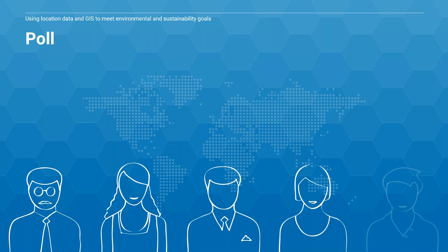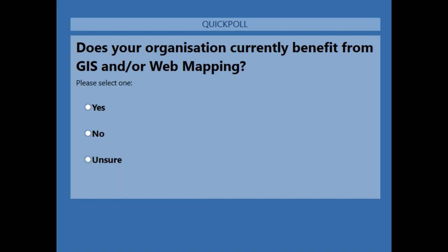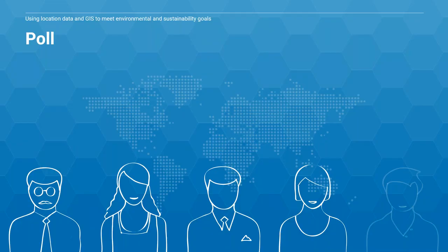The third question: does your organisation currently benefit from GIS and/or web mapping? This is to understand if you're using GIS to show your energy performance and sustainability data across the organisation. That's 65% saying yes — really good that you're already benefiting from GIS and web mapping. For the 33% that said no, this is a great opportunity to see how the data and products fit together.